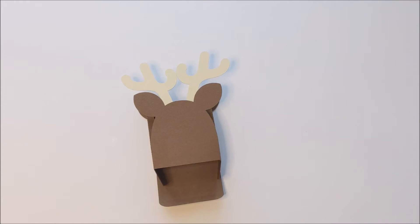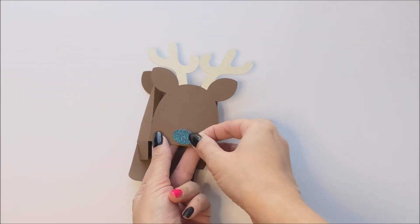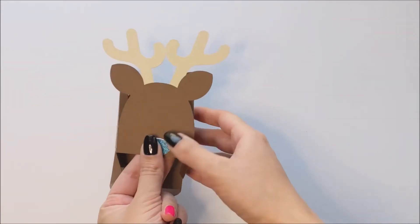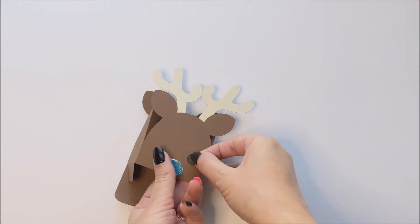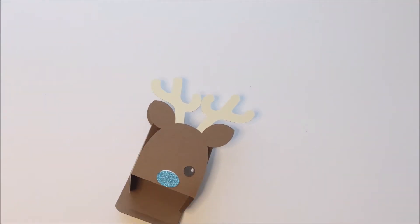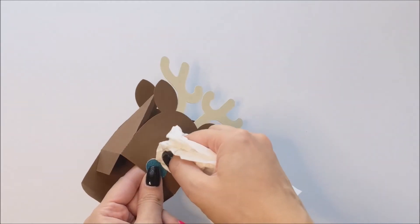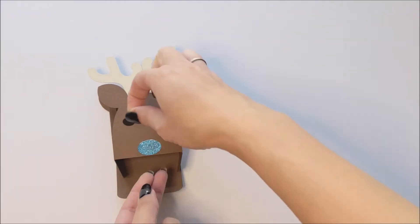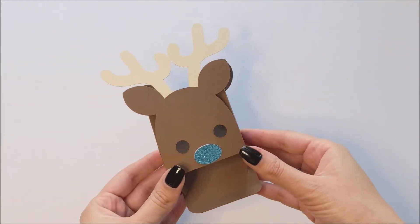After gluing down the antlers, you can then glue down the eyes and nose. I like to do the nose first and align that towards the bottom middle. And then you can place the eyes wherever you think they look cute. I've got a little bit of excess glue there. I'm going to just clean that off. There we go.